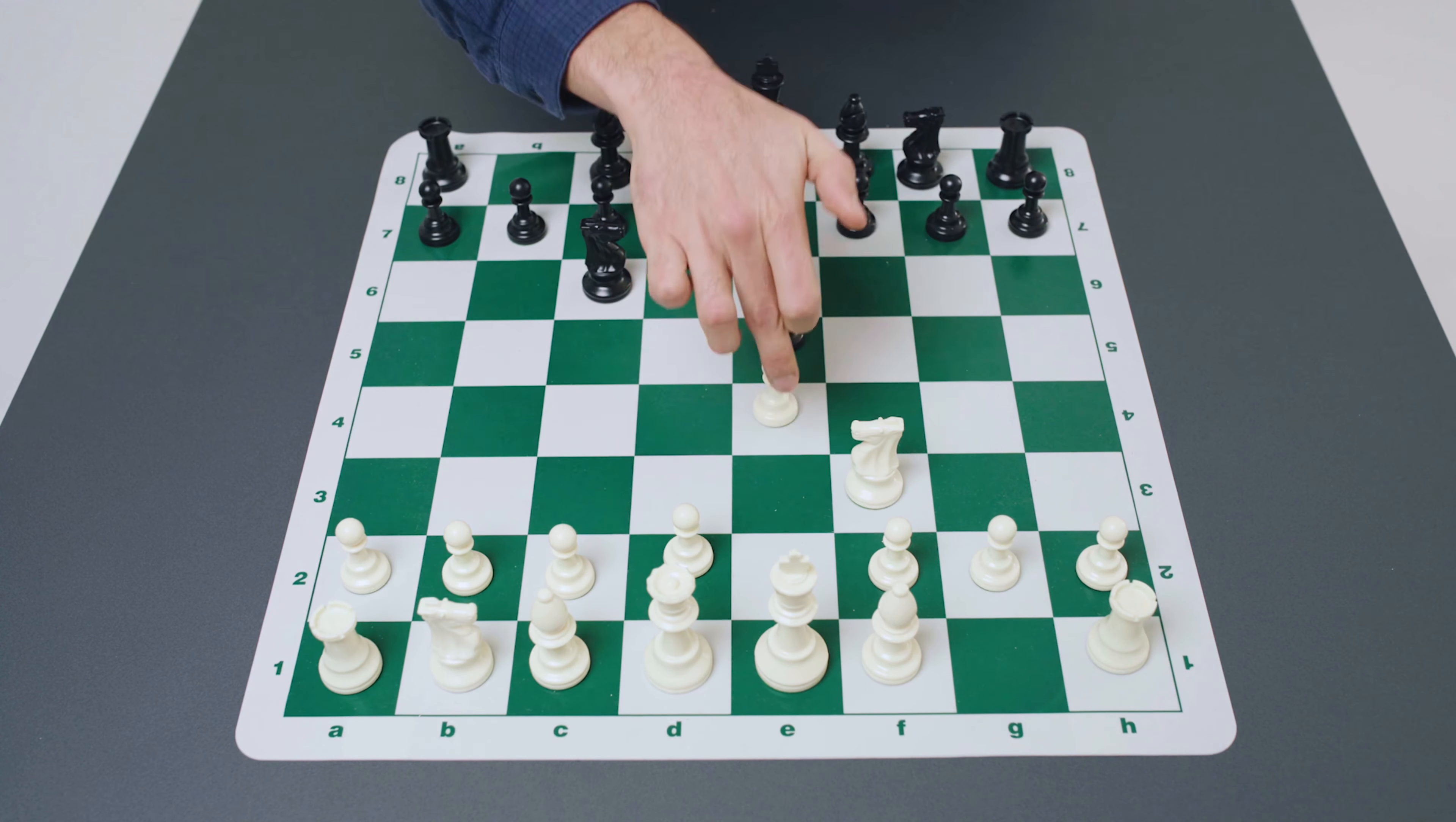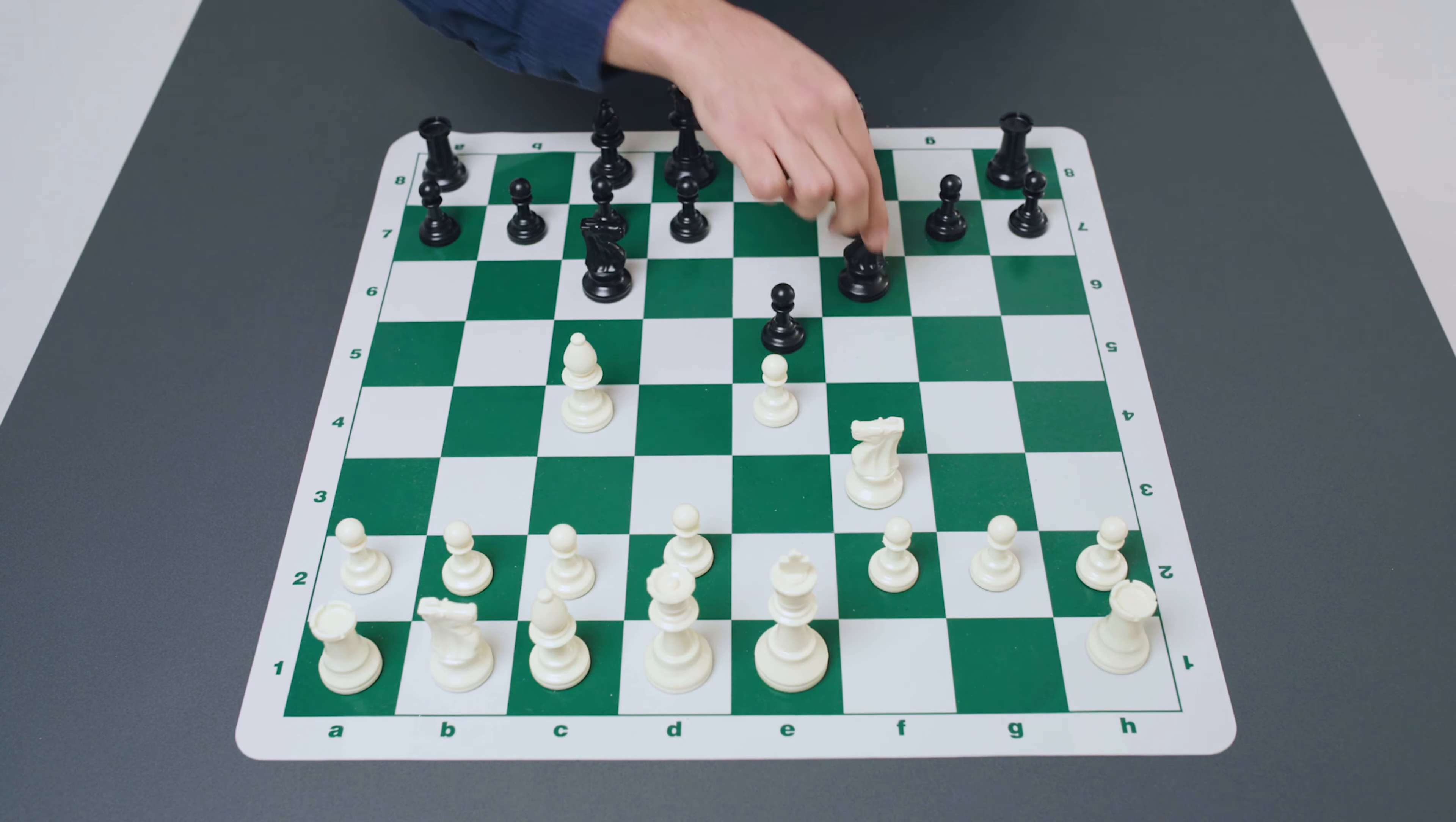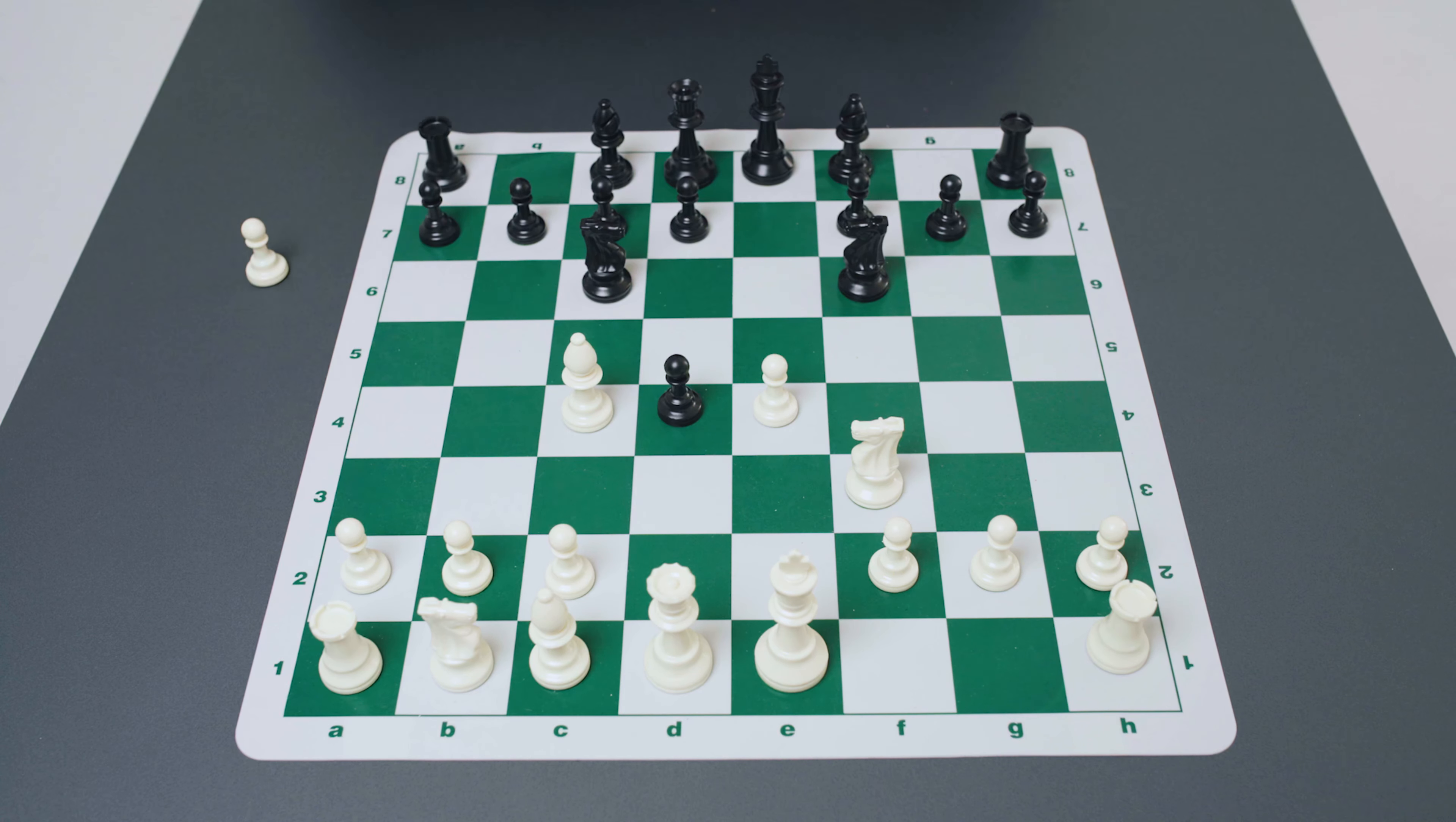This is an incredibly popular opening choice at the club level because it leads to some swashbuckling attacking chess. Now I should say, this is not the only order by which you can arrive at the so-called Scotch Gambit.